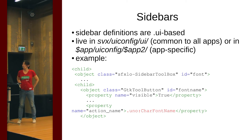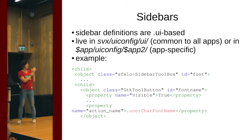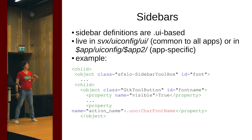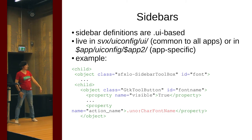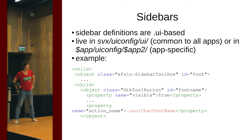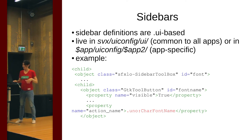Sidebars are, thanks to Gendy and his GSoC student from about two years ago, UI-based, so they're very similar to dialogs. We're looking at the UI config directory in SPS if they're universal to all apps, or in the app-specific directory — sd, sw, etc. The XML is larger but I made it smaller to fit the slide. Thanks to a feature Gendy implemented, we can directly associate the UNO command — highlighted in red — with the sidebar button in the UI file. Previously it was done in a very clumsy way in the C++ code. You can also edit it in Glade.